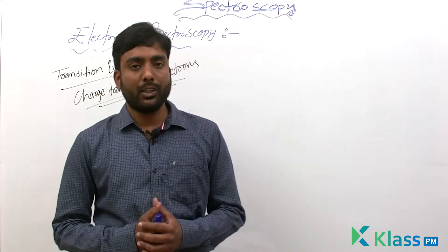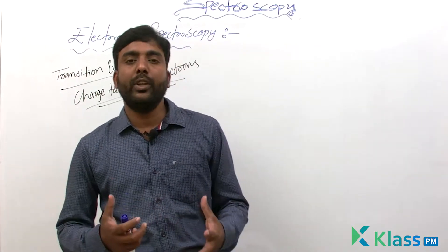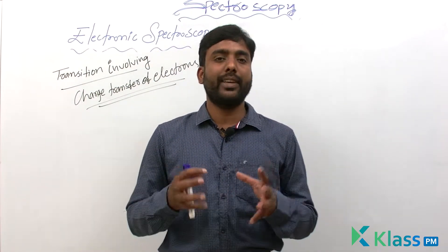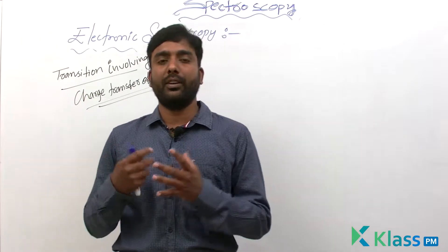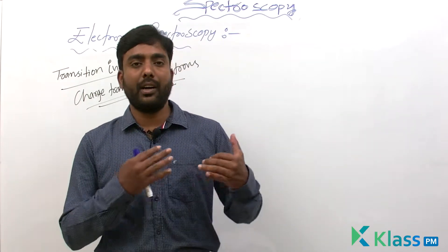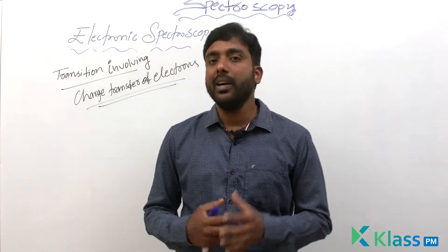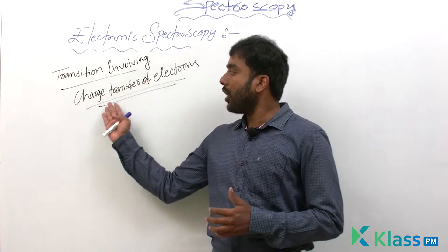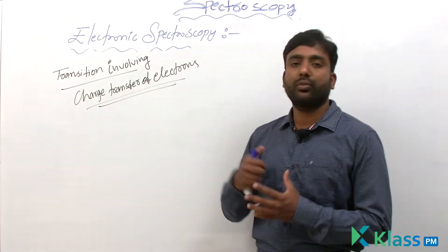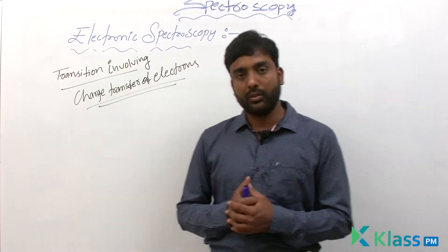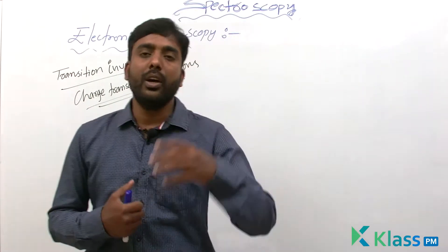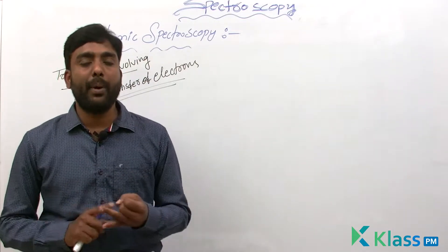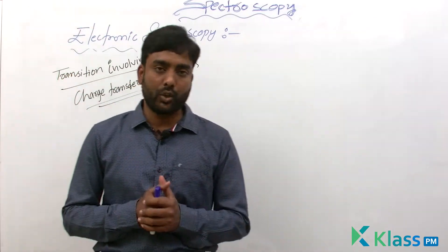Hello students, welcome to class PM. In today's class we are going to discuss the second type of transition that occurs in electronic spectroscopy. In the previous class we learned about transitions involving sigma, pi, and n electrons.